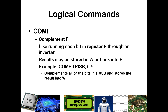COMF complements F. It's basically like taking every one of the bits and running it through an inverter so you get the exact opposite of what you started with. For example, COMF TrisB comma 0 would take everything that's in TrisB, flip each of those bits, and because you have the 0, it would store it into the W register.